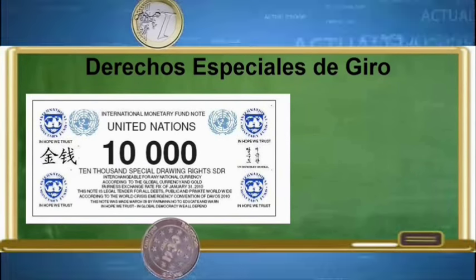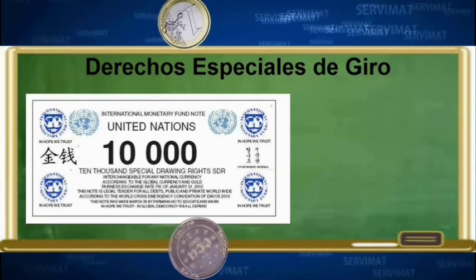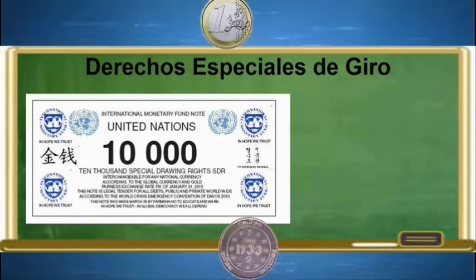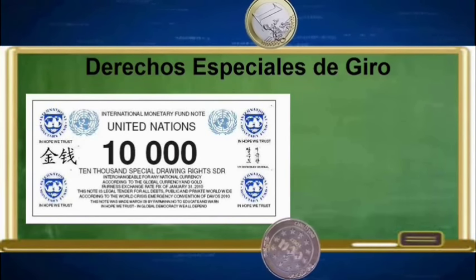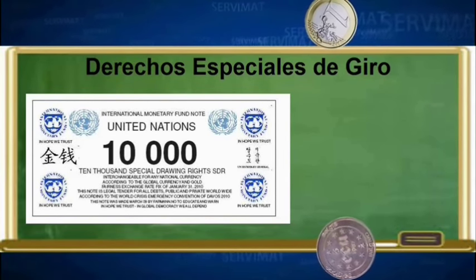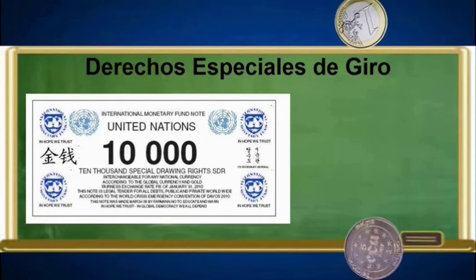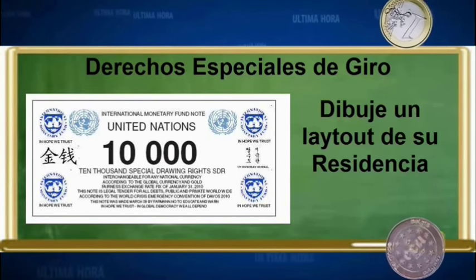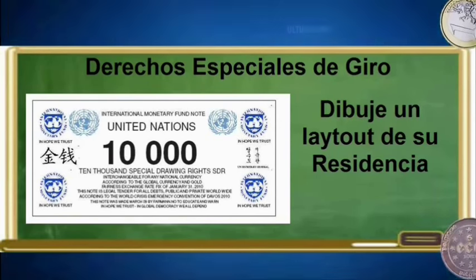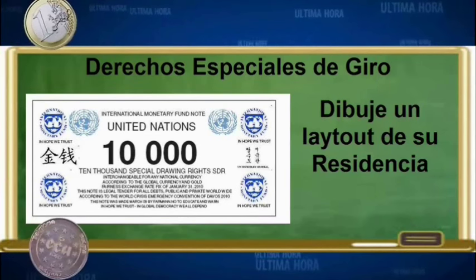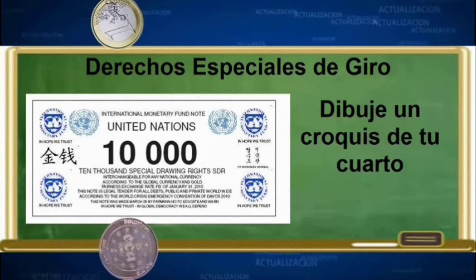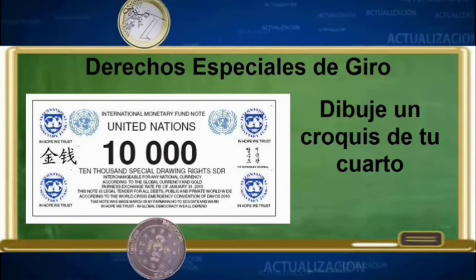Lo primero que usted debe preguntarse es por qué este nombre y no otro mucho más común. La respuesta es muy simple: a las grandes élites financieras les agrada crear palabras sofisticadas para que simplemente nadie las entienda. Por ejemplo, si yo le pido que me entregue un layout de su lugar de residencia, quizás no muchos lo entiendan. Pero si les pido que dibujen un croquis de su casa, la instrucción suena mucho más fácil de entender.